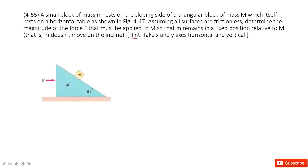First thing: it gives you a hint. This hint is super important — it tells you to take X and Y as horizontal and vertical. But even without this hint, you can work it out. In this system, this triangle and this small object — let me call them blue and yellow — when we apply a force, this system moves at the same pace. So we can consider this blue and yellow as a whole, as united objects.